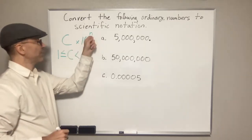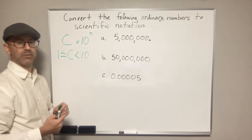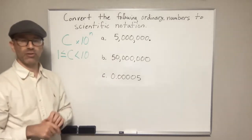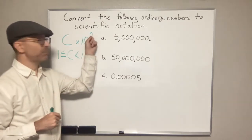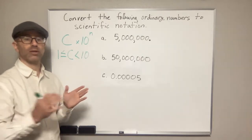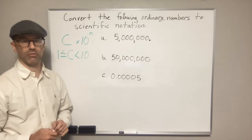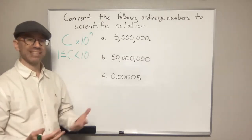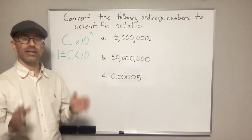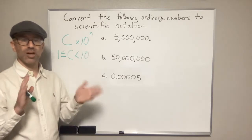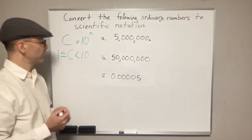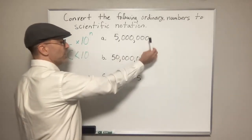Where we get this number n is based on how many times we move the decimal point. Keep in mind: large numbers have positive exponents — n is going to be positive for large numbers greater than ten. Numbers less than one are going to have negative exponents. So small numbers, numbers less than one: negative exponent. Large numbers, ten or greater: positive exponent.